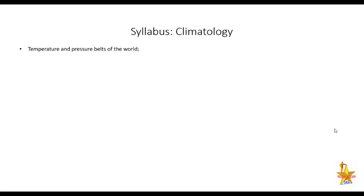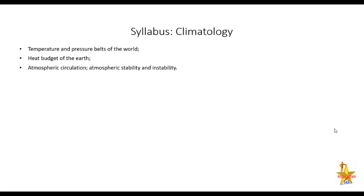The first topic in the syllabus is temperature and pressure belts of the world, which is quite similar to what you have studied in GS — no extra content needed. Next is the heat budget of the Earth, again very similar to the GS section. Then atmospheric circulation, and atmospheric stability and instability. In the GS section some topics were covered briefly, but here we have discussed them in a very detailed manner, so you can refer to those videos.